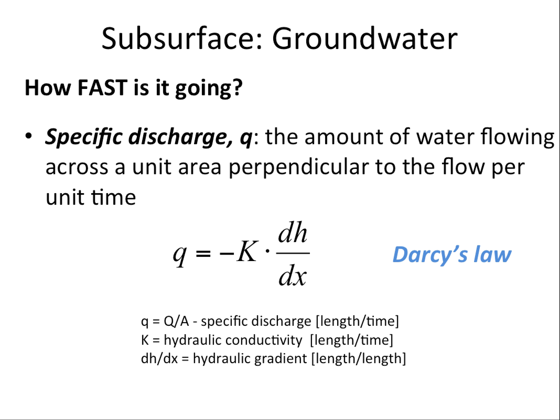Specific discharge is the amount of water flowing across a unit area perpendicular to the flow per unit time. Q, specific discharge, is equal to the volume of water per area per time. The units work out to a length per time because you've got volume like cubic centimeters over area, which is centimeters squared per time — the squared centimeters cancel out, so you've got centimeters per time.